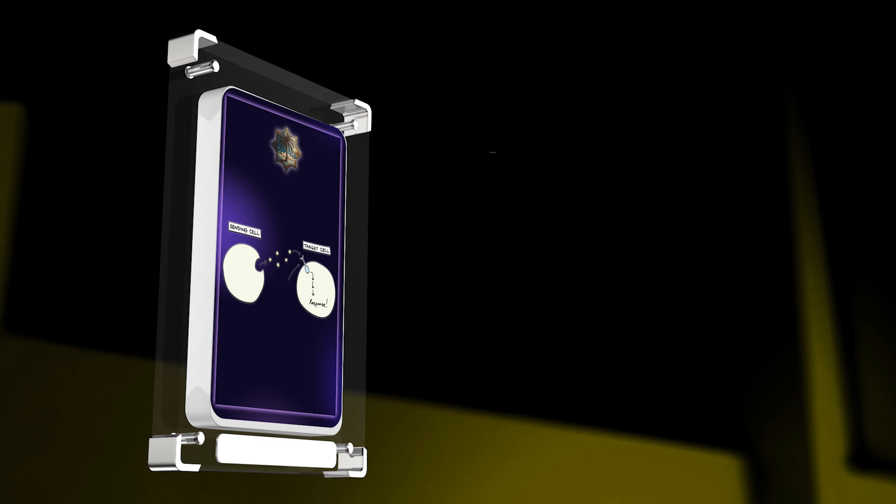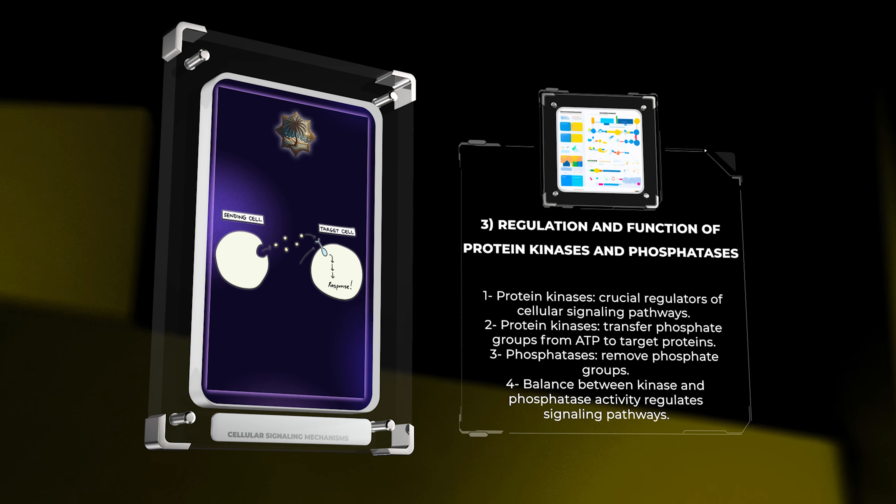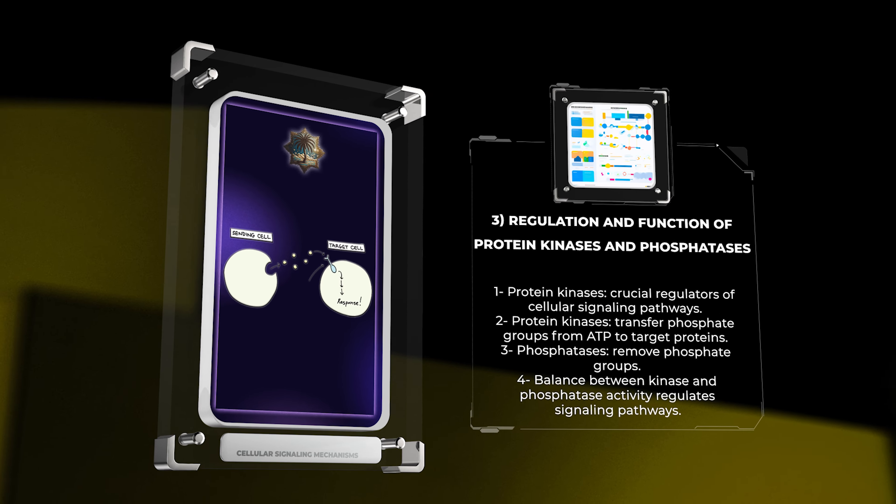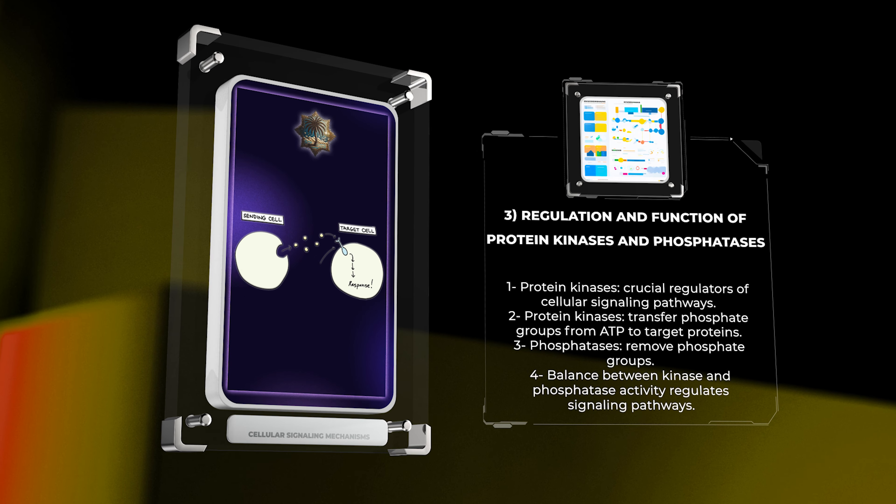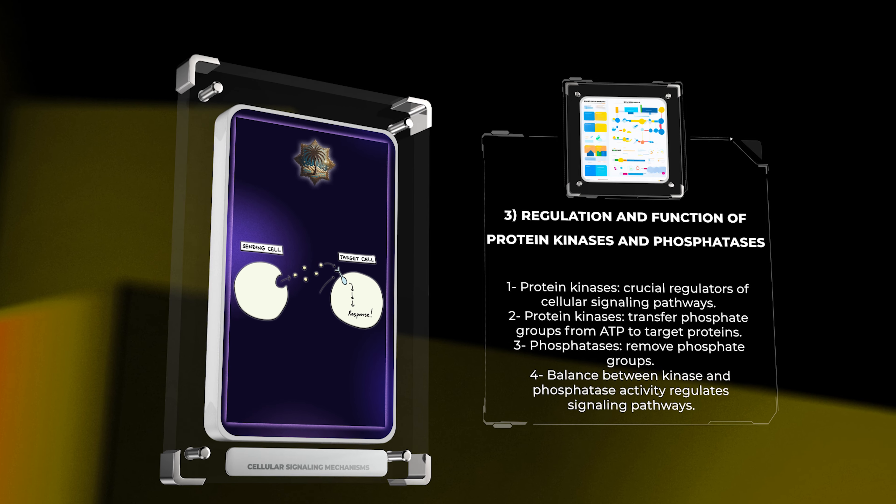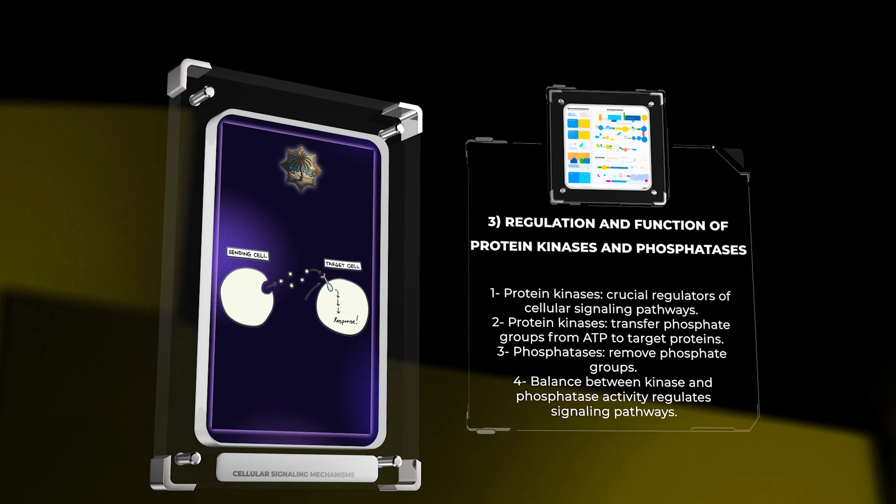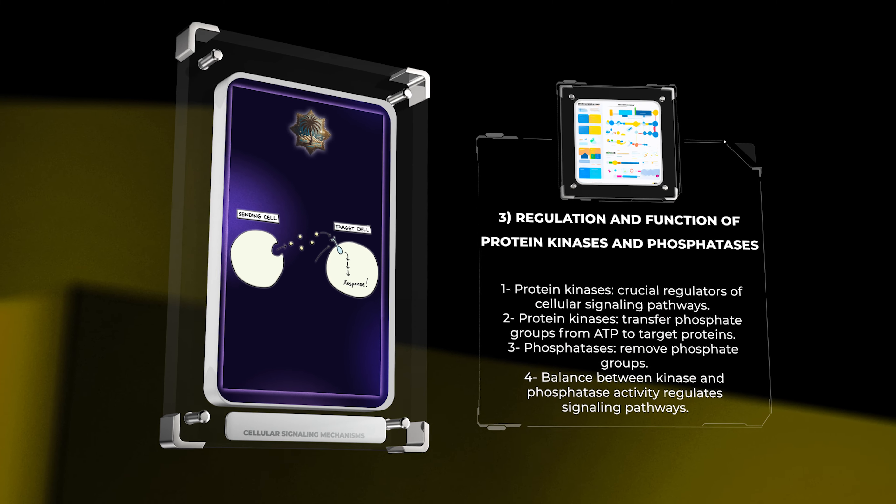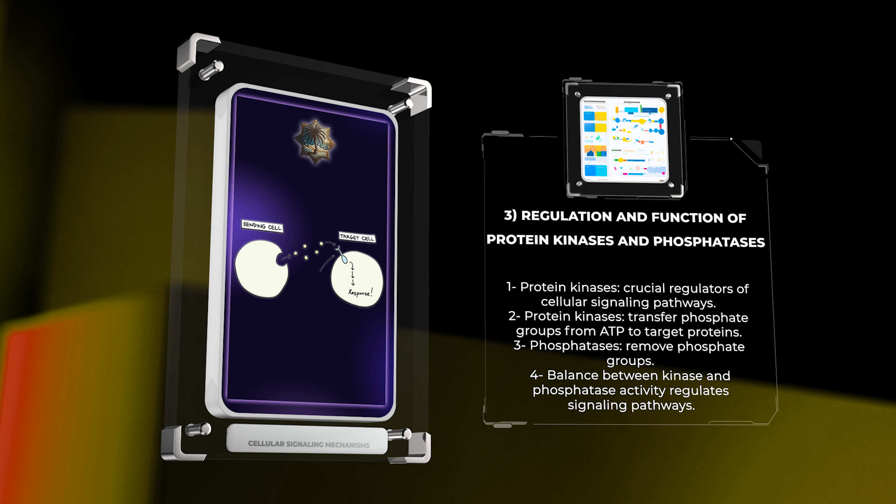Protein kinases and phosphatases are crucial regulators of cellular signaling pathways. Protein kinases catalyze the transfer of phosphate groups from ATP to specific target proteins, whereas phosphatases remove these phosphate groups. This balance between kinase and phosphatase activity tightly regulates the activation and deactivation of signaling pathways. Imbalances in kinase-phosphatase signaling have been associated with numerous diseases, making them attractive targets for therapeutic interventions.